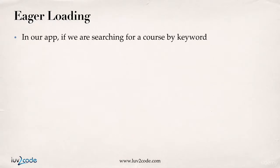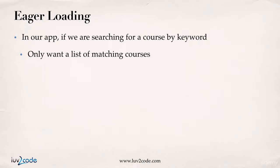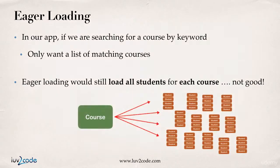In our app, if we're simply searching for a course by keyword — just doing a normal search — we only want a list of matching courses. But eager loading will still load all the students for each course. And that's not good. We only want the titles or the descriptions of the courses, but not all of the students.